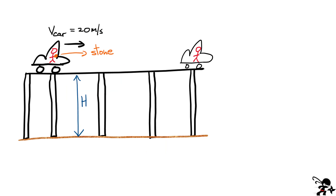Here's a sketch of what's going on. We've got the guy in the car, and everything is moving initially at 20 meters per second along the horizontal axis. Once he drops the stone, it has some initial velocity, so it doesn't drop straight down — that's really one of the keys. It's going to have a parabolic trajectory since we're ignoring air resistance, and then it hits the ground. I'm going to label T1 as the amount of time it takes for the stone to fall from the point of release all the way to hitting the ground.